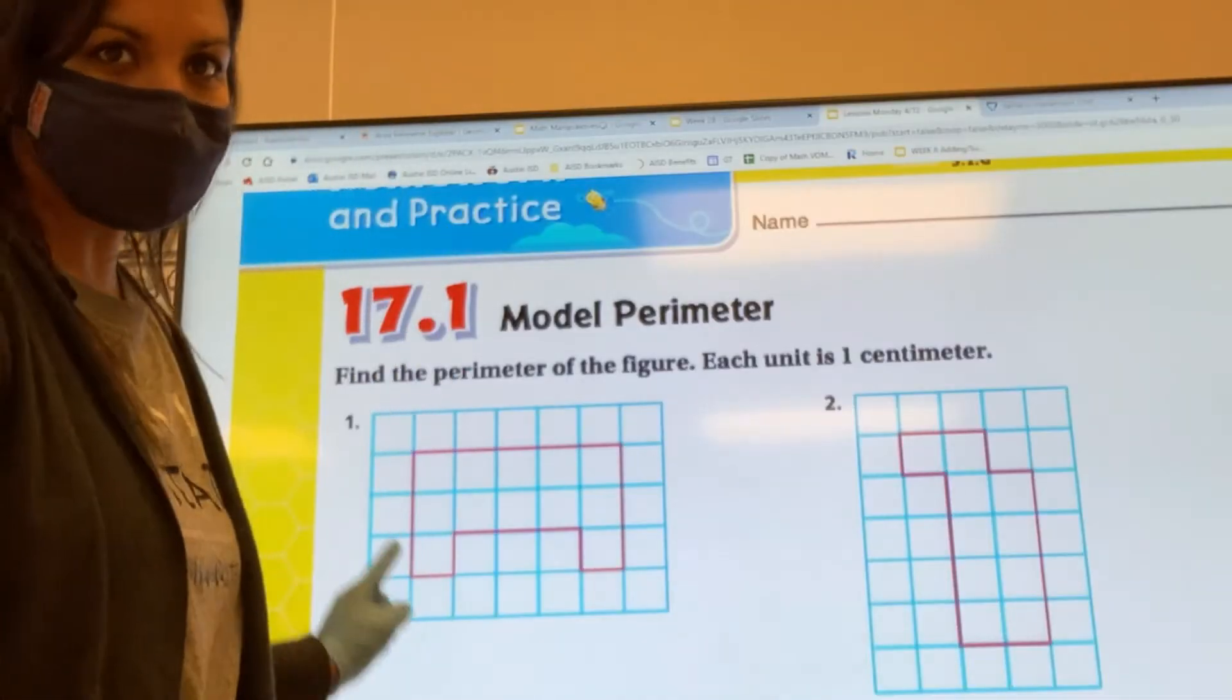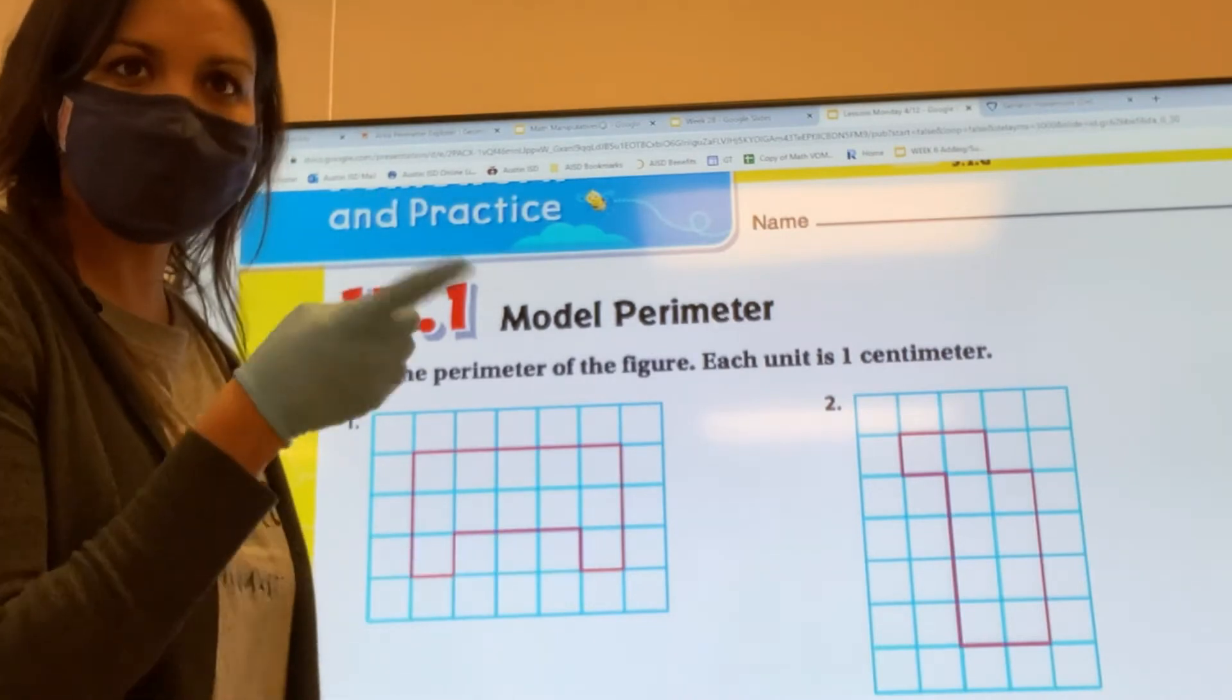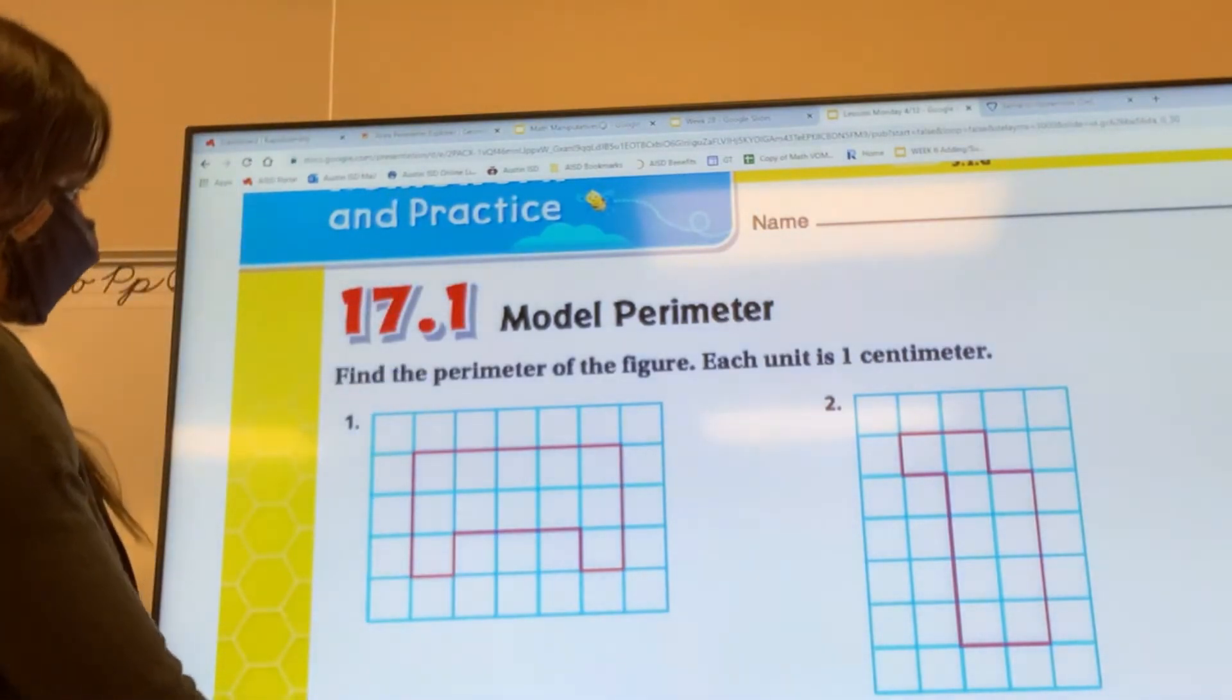Let's go ahead and practice some more. Now in this shape there are no numbers so we have to use our finger and start counting.